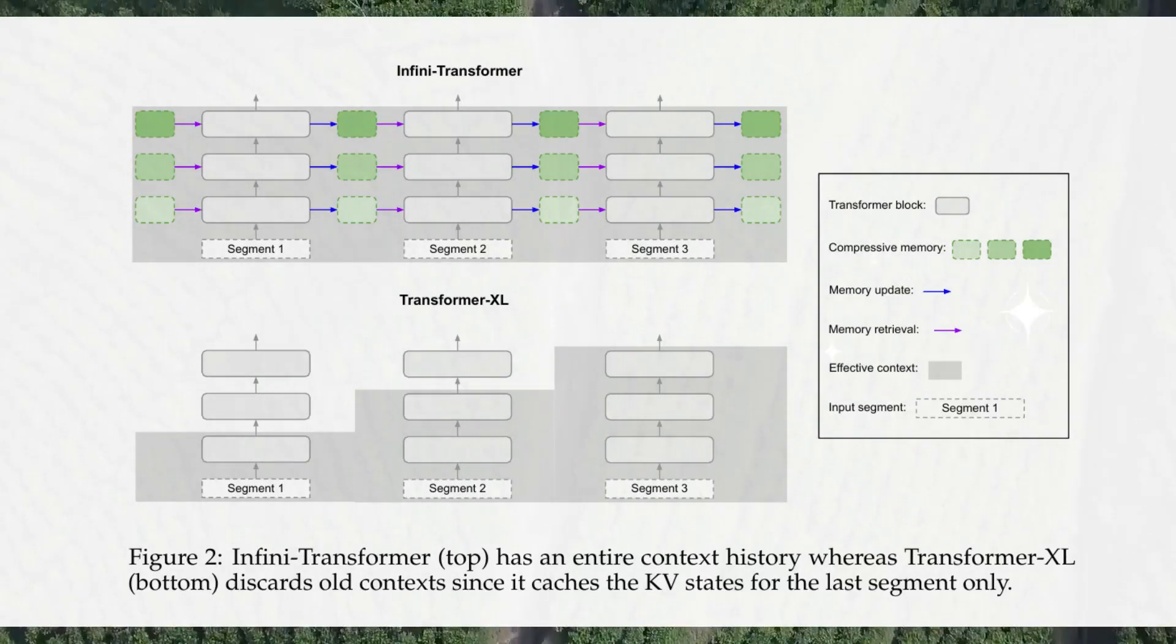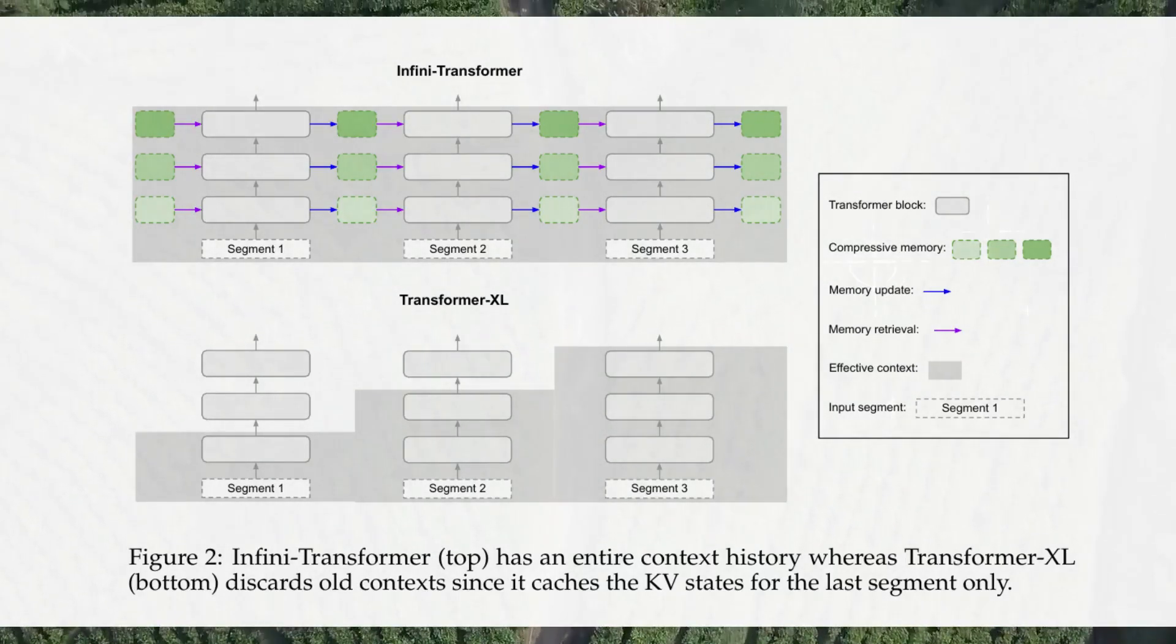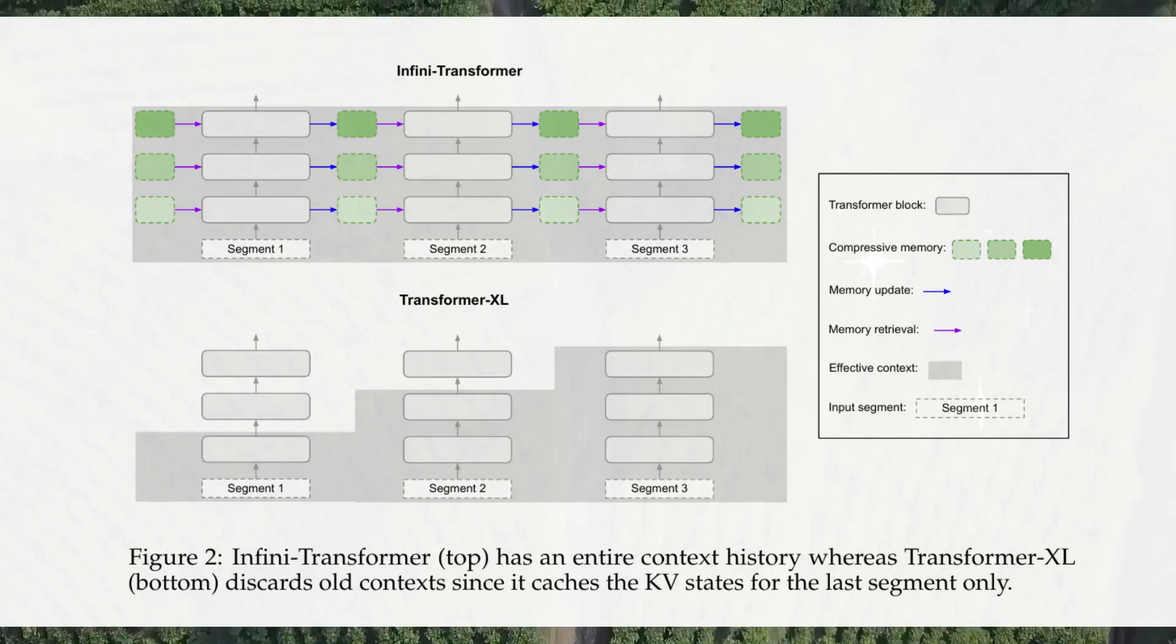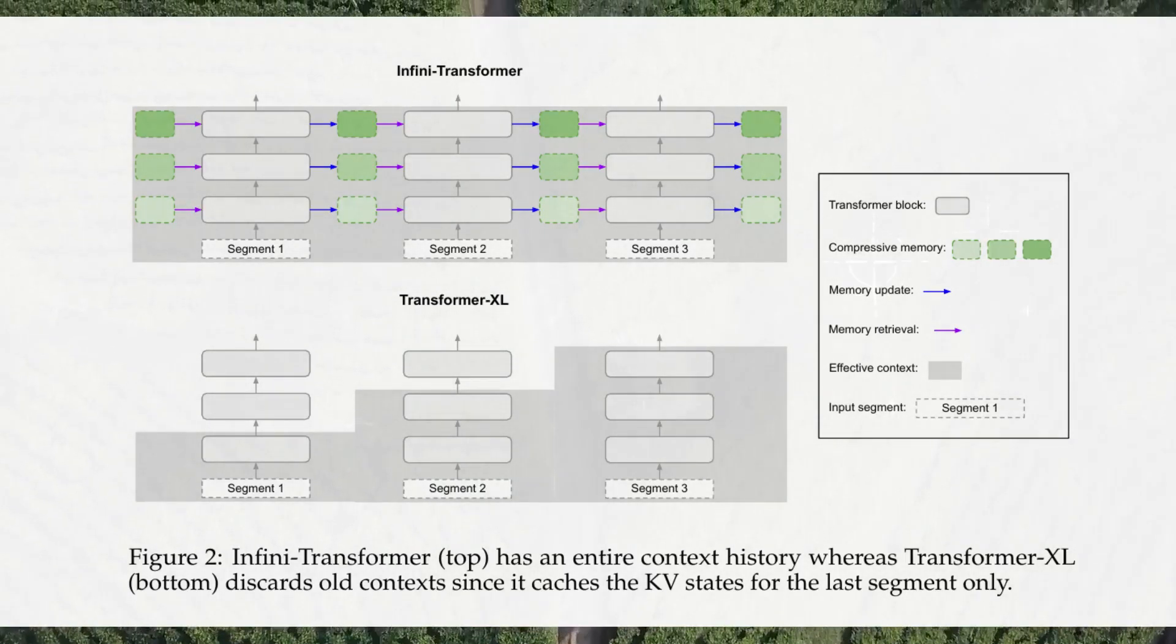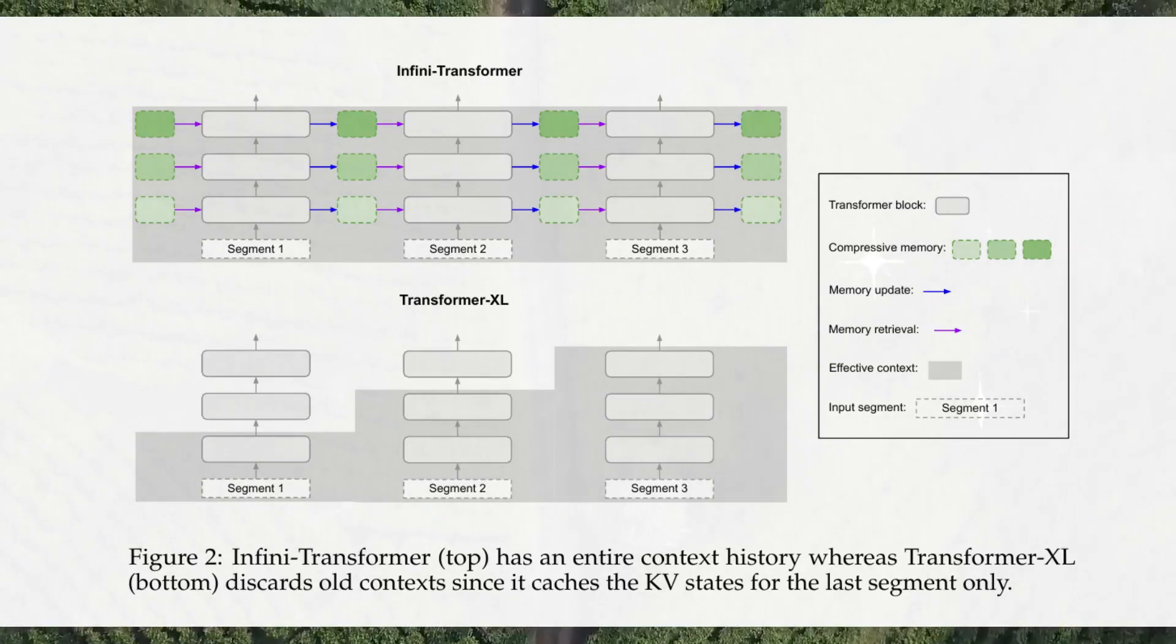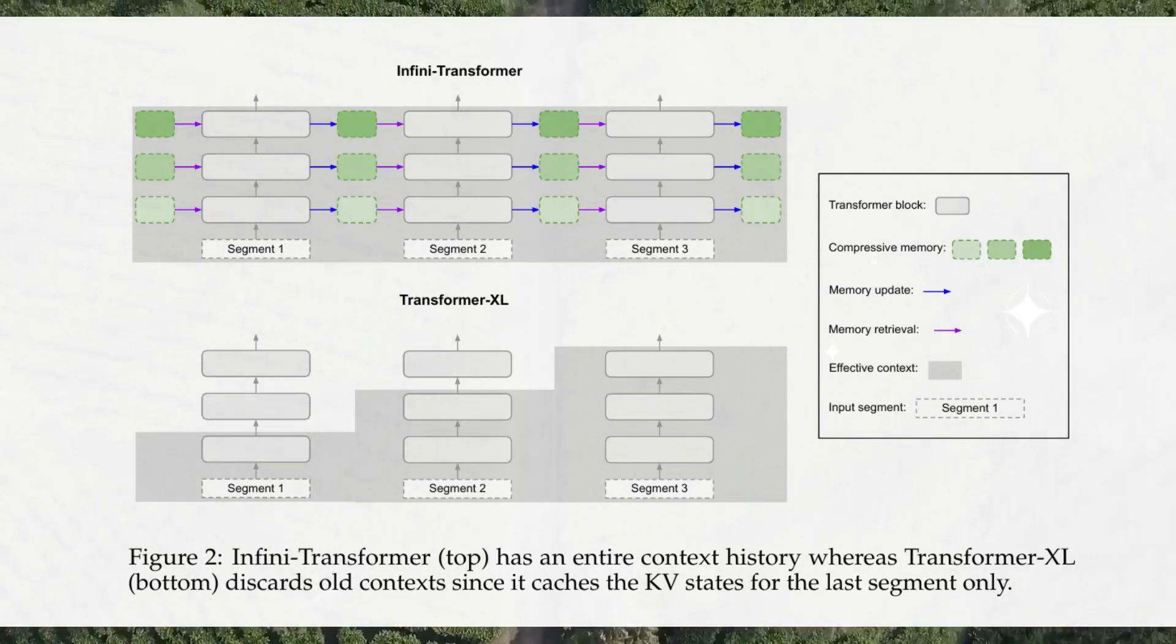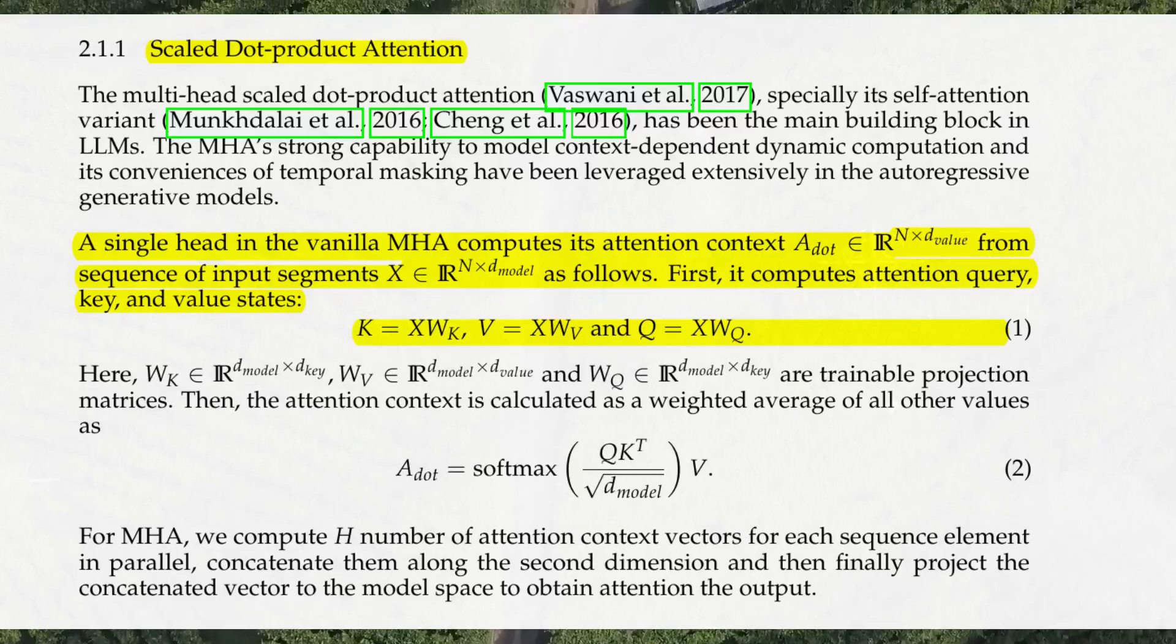Compressive memory integration: Instead of discarding the attention states from previous segments like Transformer XL, Infini-attention stores them in a compressive memory. This memory uses an associative matrix to efficiently store and retrieve key-value pairs, enabling the model to access information from the entire input history.